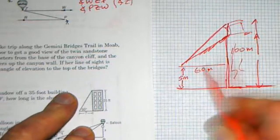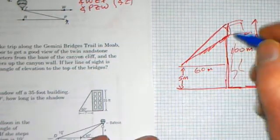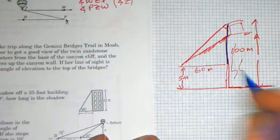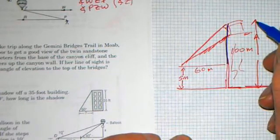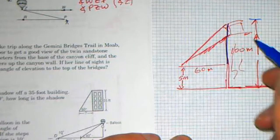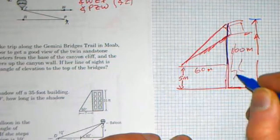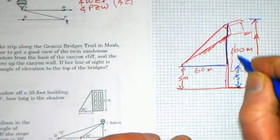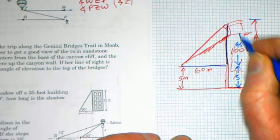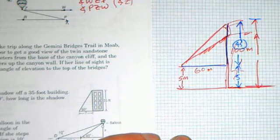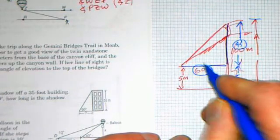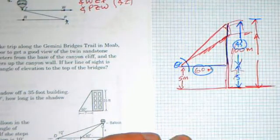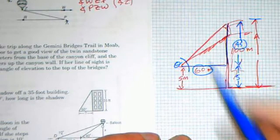The base of the cliff is down here so I'm assuming that this 100 meters is measured up from the base. We need to find the angle of elevation to the top of the bridges. This is actually this angle here. We can find this side of the triangle by thinking about this total distance being 100 meters. We have to take five meters off of 100 meters. This part here is five meters, this is her line of sight. This part here then would be 95 meters up to the top.